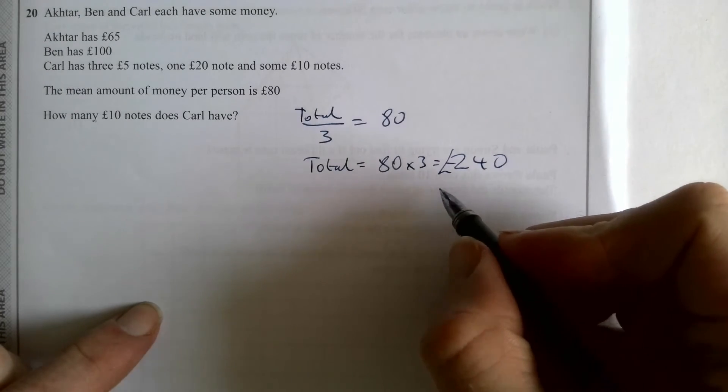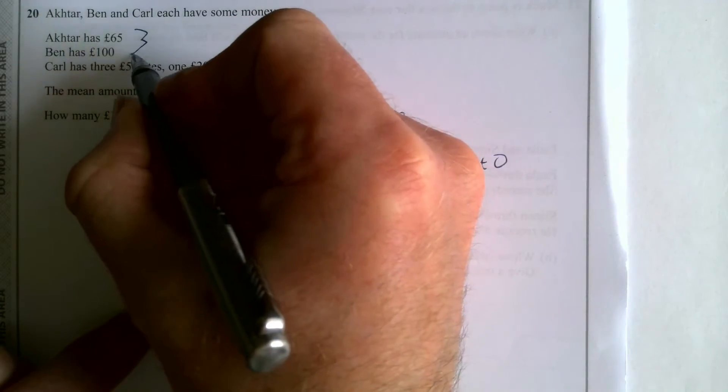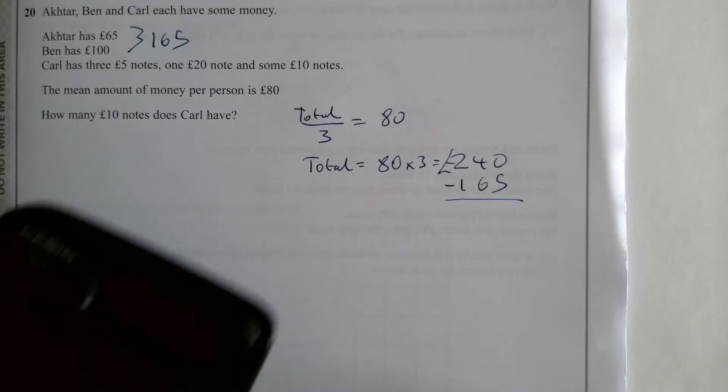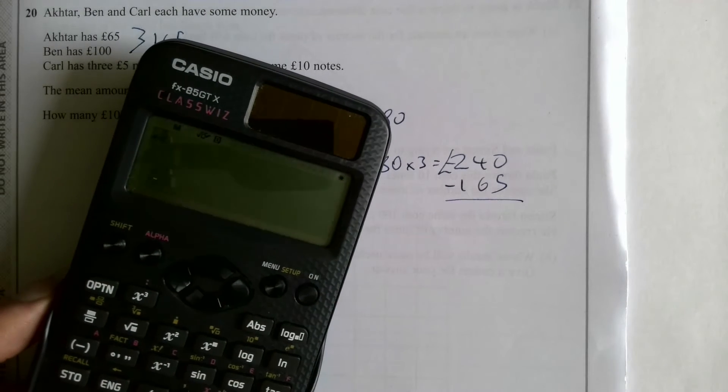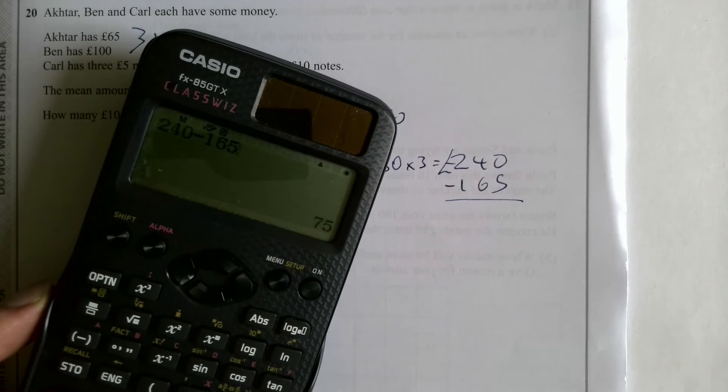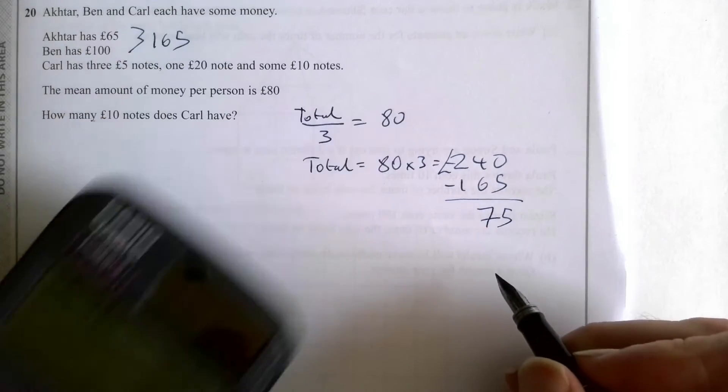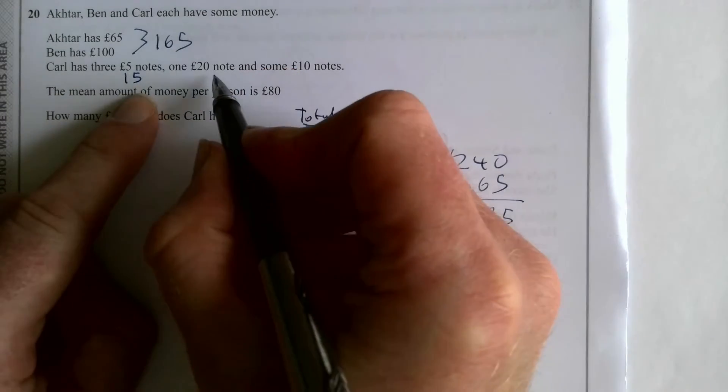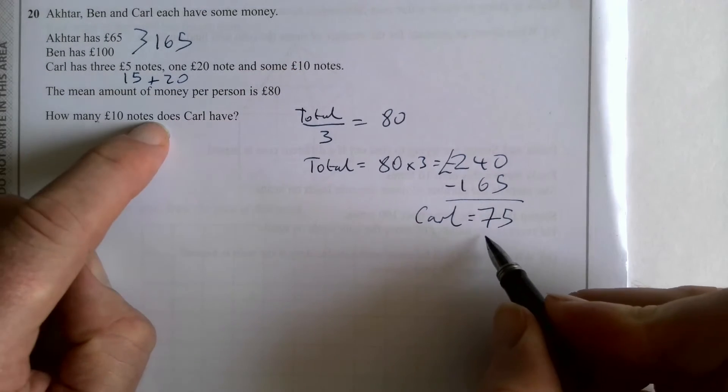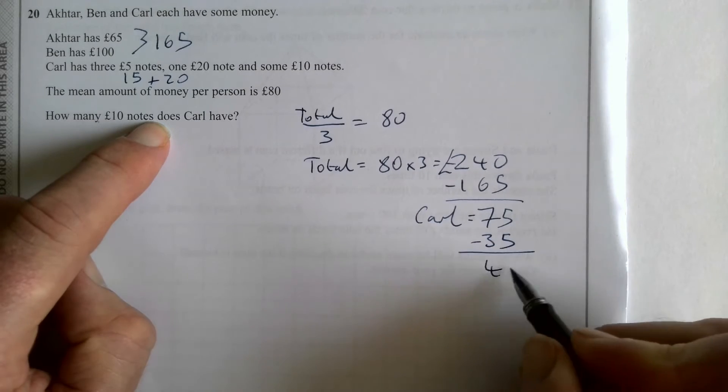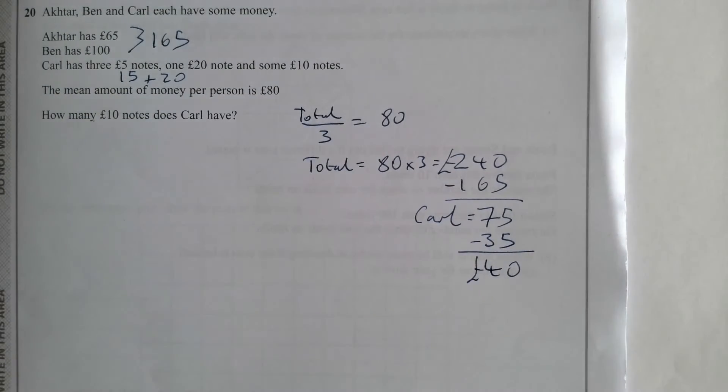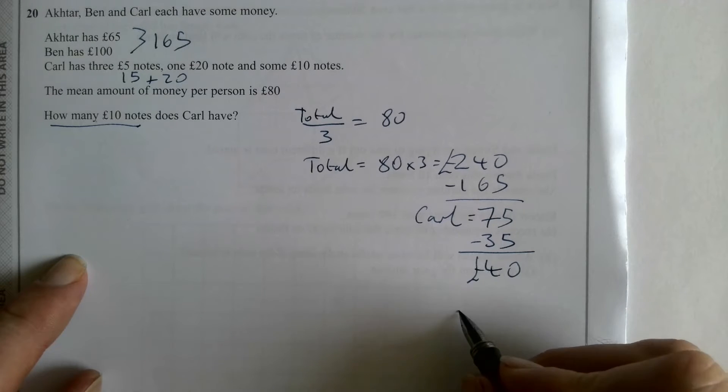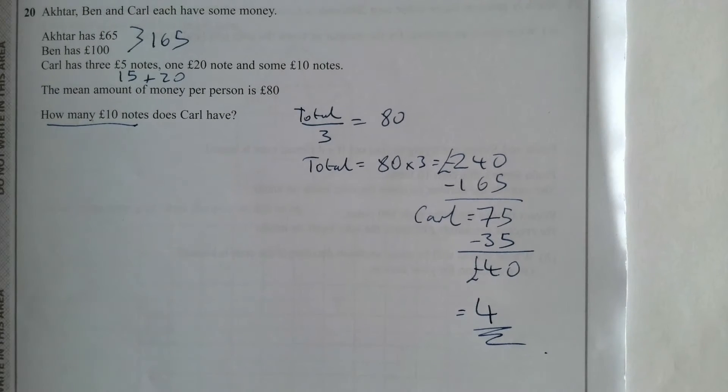Now Actar and Ben together have 165 pounds. So I'm going to take that 165 away from 240. I'm not going to strain my brain. I'm just going to use my calculator. And that says 75 pounds. Carl has 75 pounds. He's got three five-pound notes, which is 15, plus 20. That's 35. So if we take the 35 away, the 40 pounds must be in 10-pound notes. The question asks how many 10-pound notes. Well, four 10s are 40. So it equals four for your final answer.